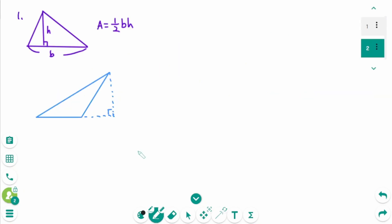Number 1 is the most basic method and we already know the formula. A equals 1 over 2 times base times height.